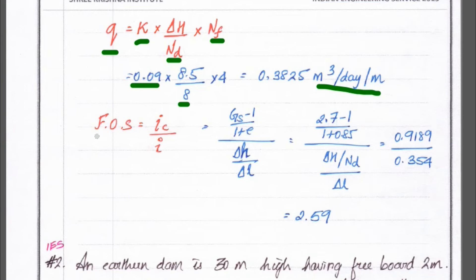We can get 0.3825 meter cube per day per meter. So, again we have a second question is factor of safety. So, FOS is equal to ic divided by i. So, we know ic divided by i.